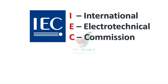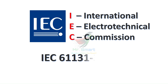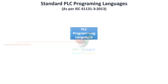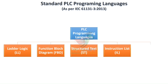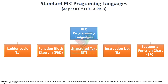The International Electrotechnical Commission, or IEC, created the global standard for PLC programming, known as IEC 61131-3. This standard defines the five main programming languages used in automation today, each with unique strengths. Just like spoken languages, some are simpler for beginners, while others offer more flexibility and power.